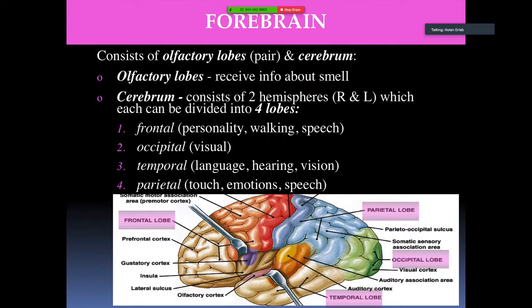In the forebrain, the olfactory lobe receives information about smell. The cerebrum consists of two hemispheres — right and left. The cerebrum is basically the outer layer of the brain with a high surface area.